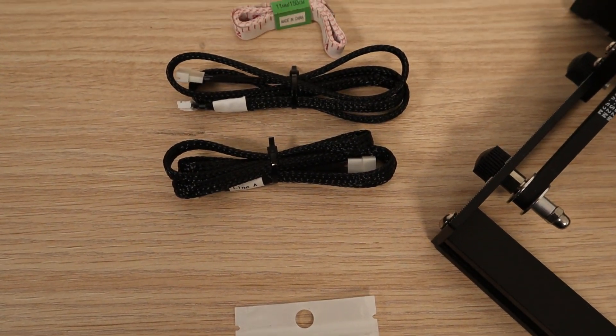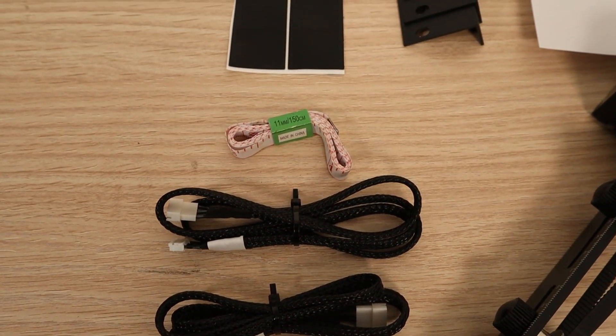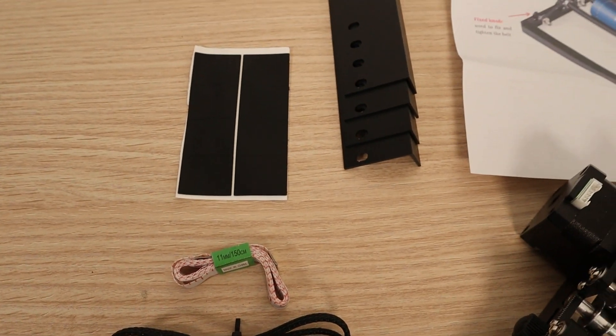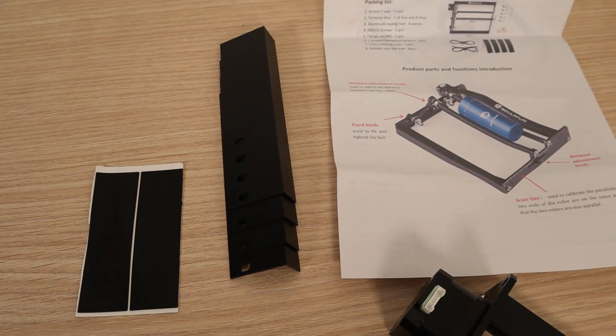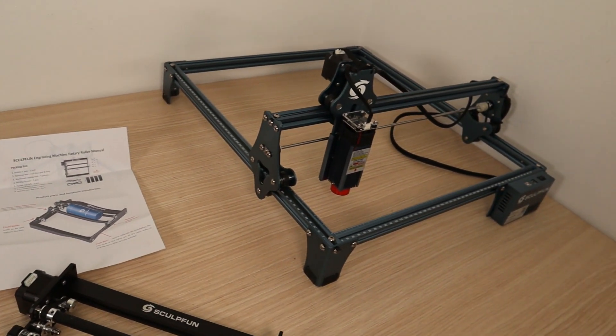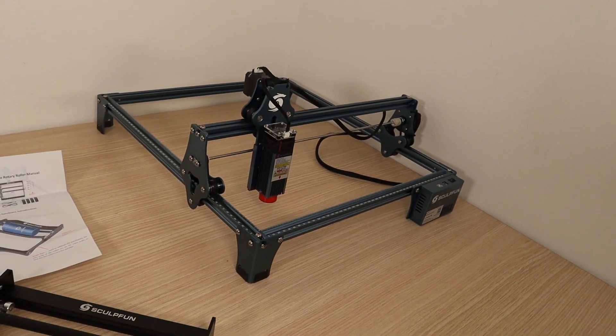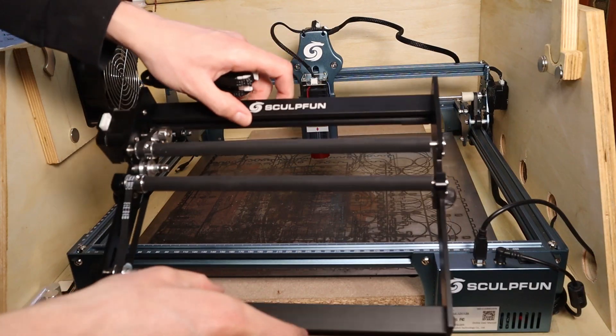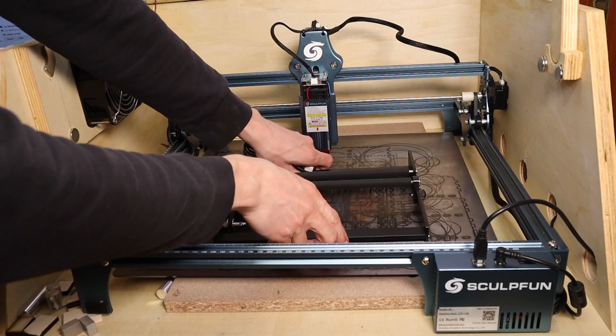In the package you get the wiring harness, a tape measure, rubber feet, and razor feet for the machine. You will find a link to the rotary attachment in the video description below. I have also included a discount coupon so you could save some money if you decide to buy it.